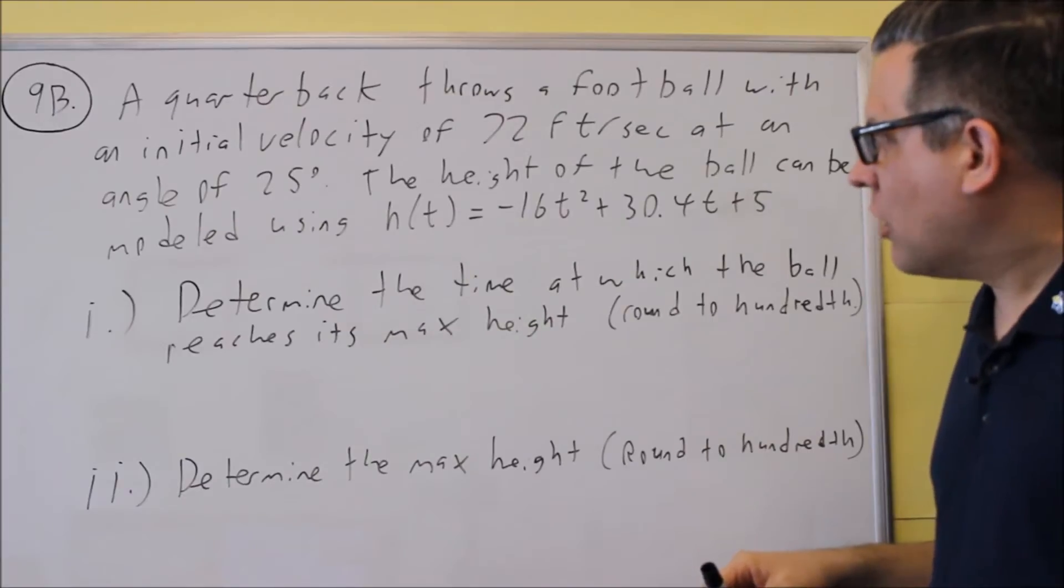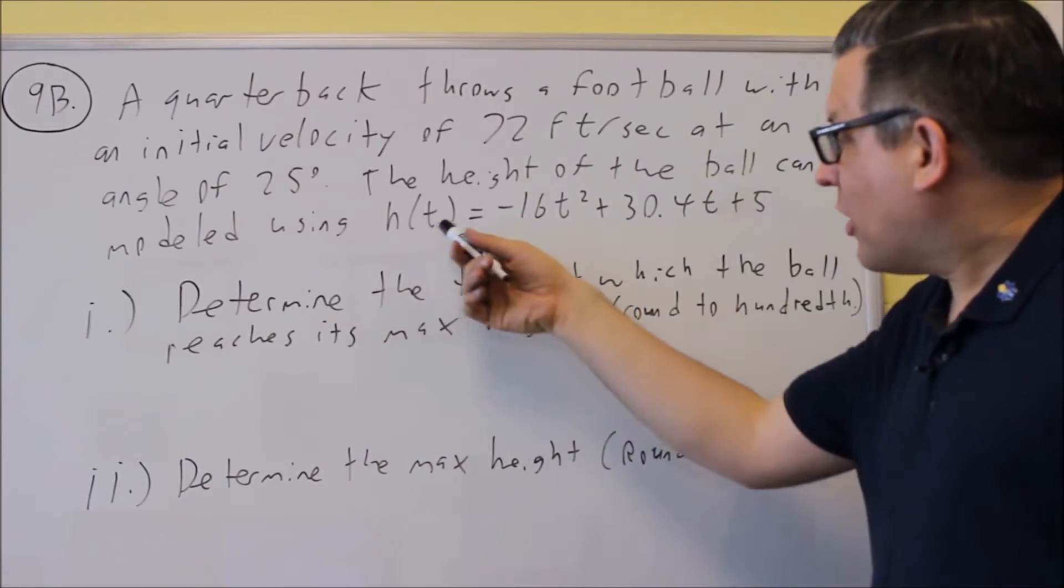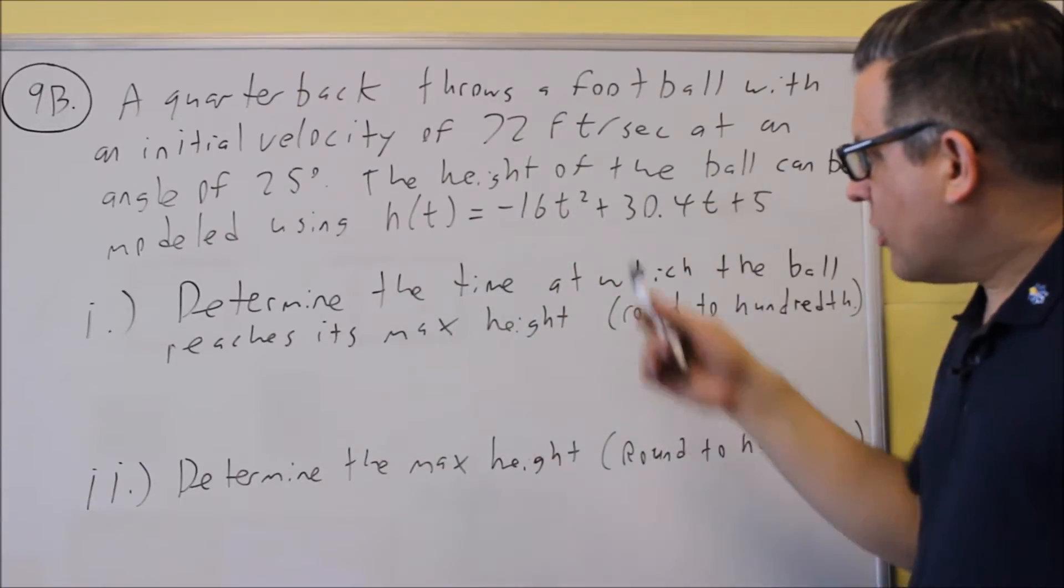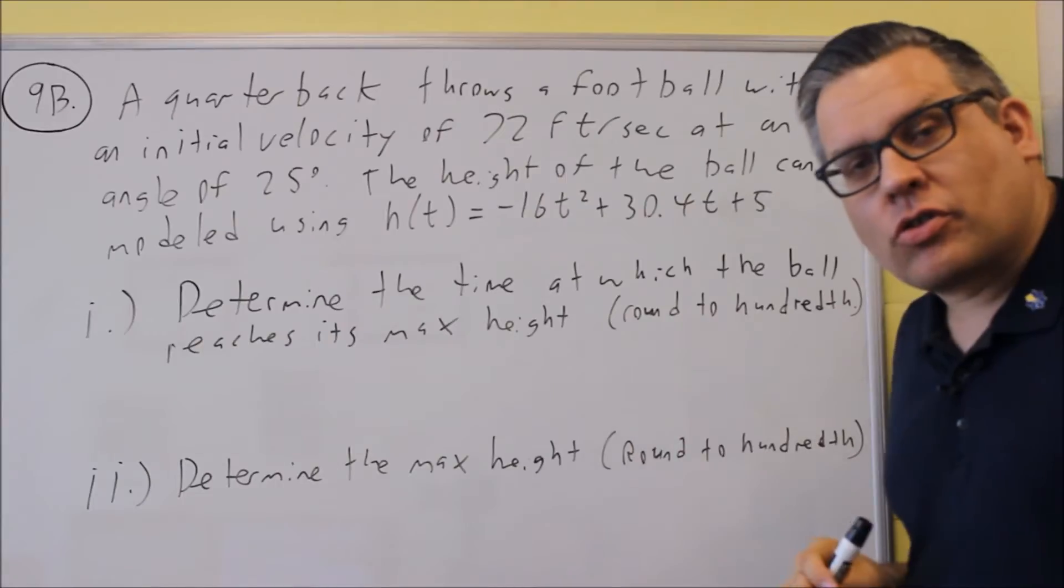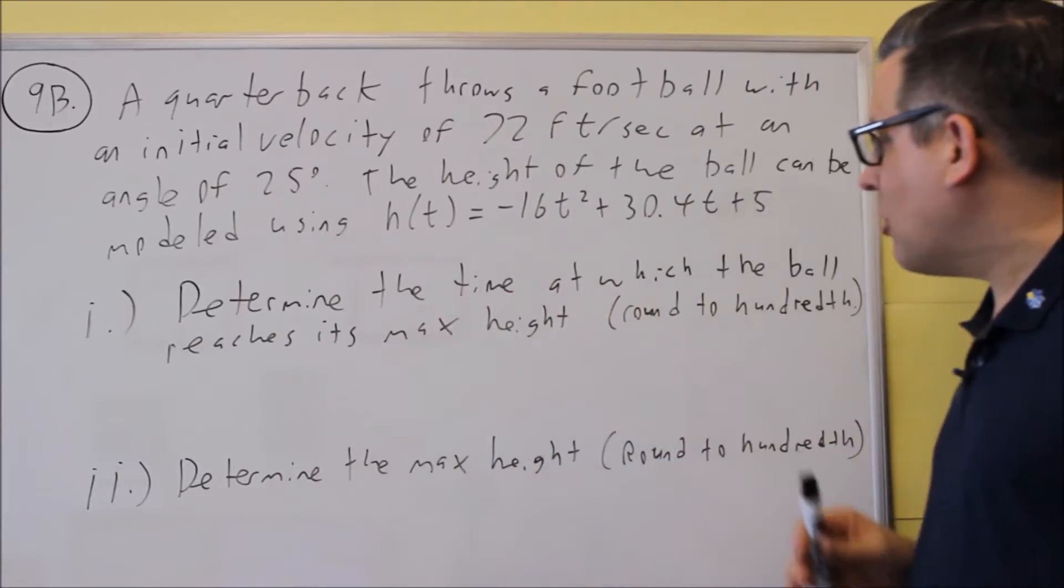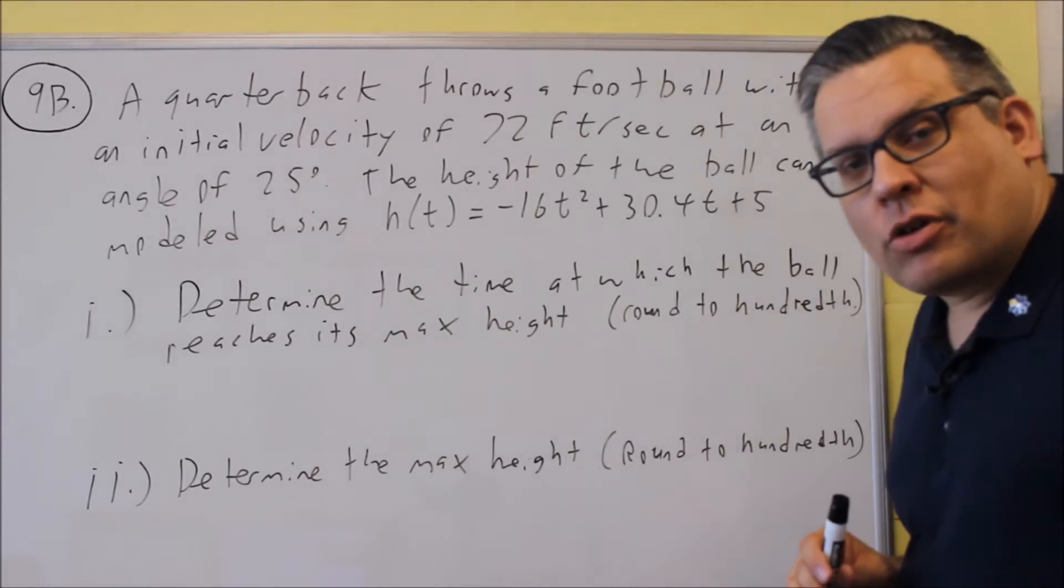Now, these two questions—this is basically modeling when you throw a football. It's modeling the height. T is in seconds, and it's going to give you a height after a certain time. So, it's saying determine the time at which the ball reaches its maximum height, and we're going to round that to the nearest hundredth.